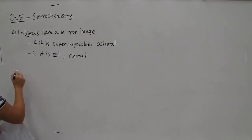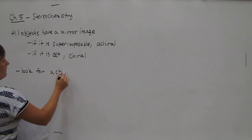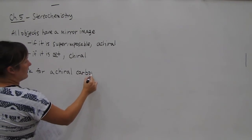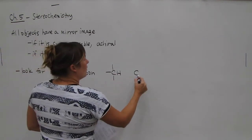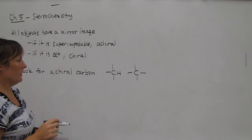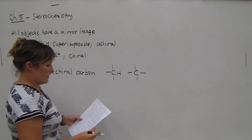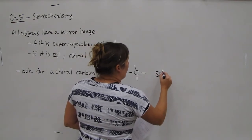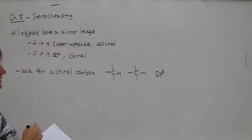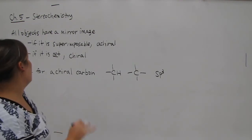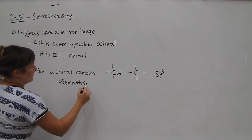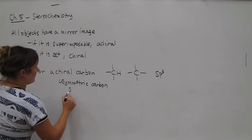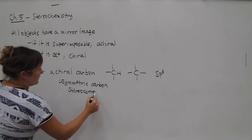For molecules, we're going to look for a chiral carbon. Remember that the chiral carbon, we want to focus on a CH, which is known as a methine, or we want to focus on quaternary carbons, and there has to be four different groups attached. We're only looking at sp3 carbons, so we're not focusing on sp2 or sp. The other name for a chiral carbon is asymmetric carbon, or sometimes you'll see stereocenter. These are all interchangeable.